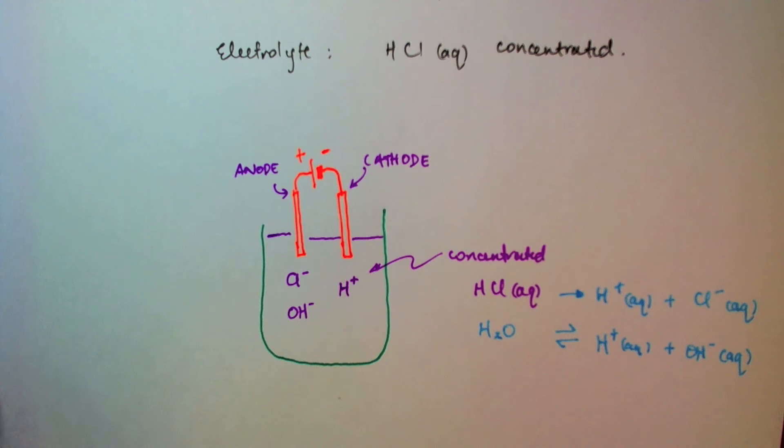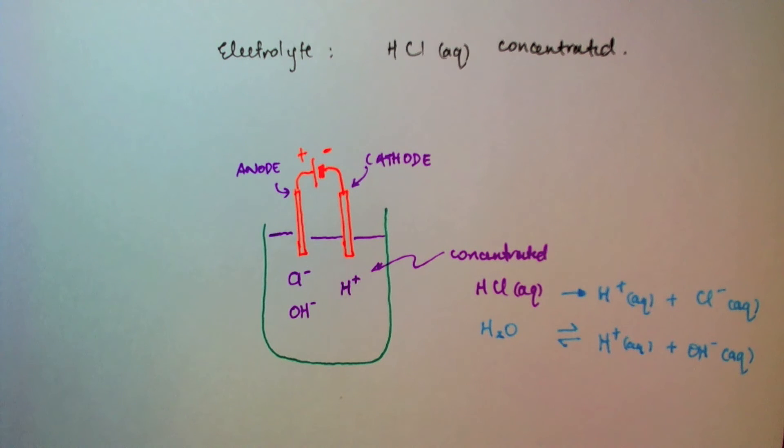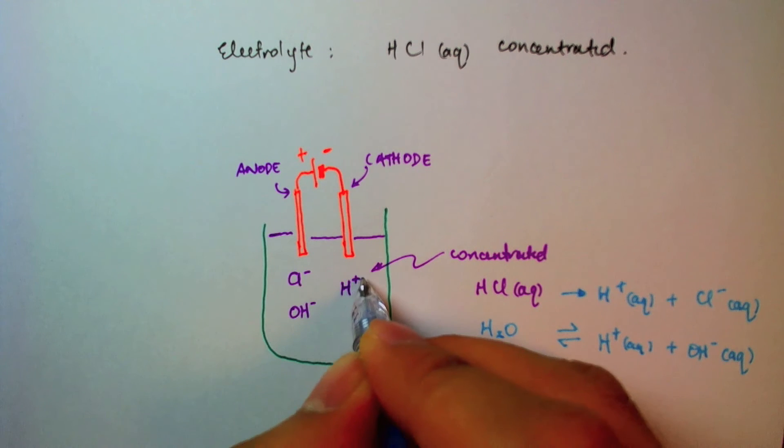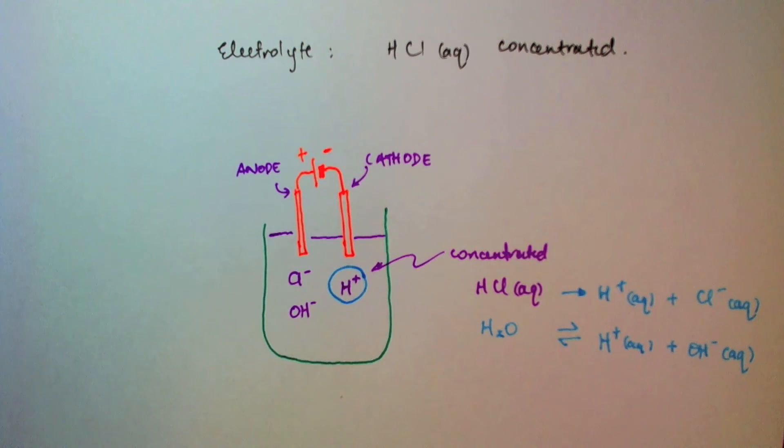So in this case, the reaction at cathode is simplified because we don't have to choose between two ions, like we had in the case with the electrolysis of sodium chloride. So immediately, we see that hydrogen will be discharged at cathode. So I'll circle hydrogen to signify that it is the species that will be discharged.